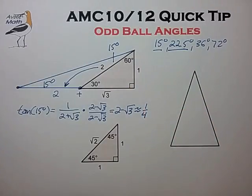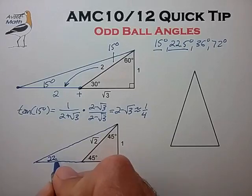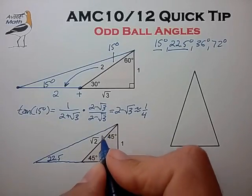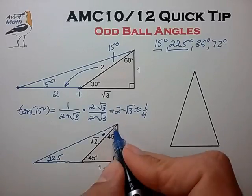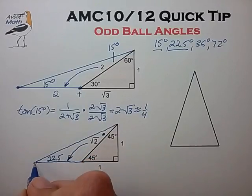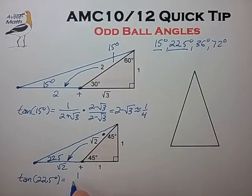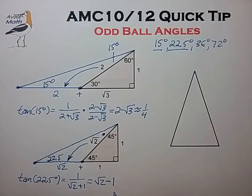Now we can deal with the 22 and a half degree angle in the same way, by extending the base of this triangle out to form a 22 and a half degree angle at the base. This angle plus this angle has to equal 45, which makes this a 22 and a half degree angle. This isosceles triangle now has a side length of root 2, which transfers to this line segment length. We can quickly write the tangent of 22 and a half degrees as the opposite divided by the adjacent, and rationalize that to find it equals root 2 minus 1, approximately 0.4.